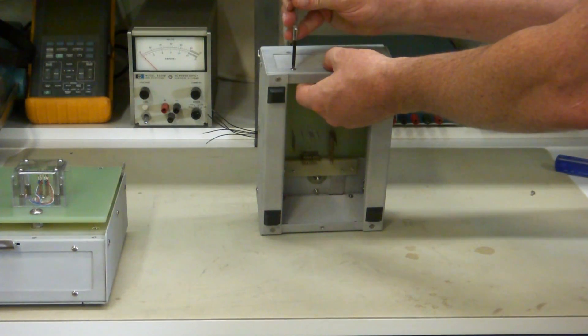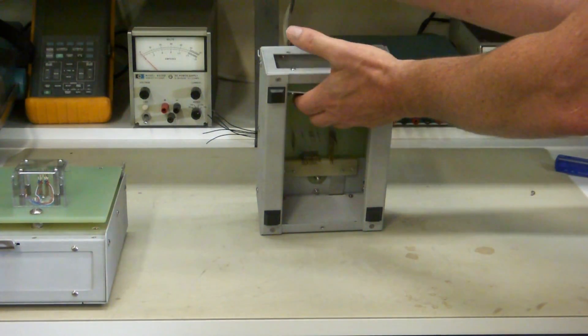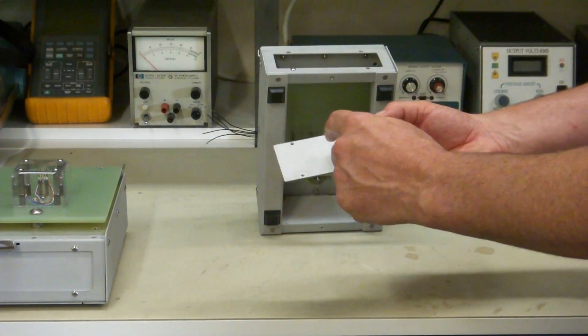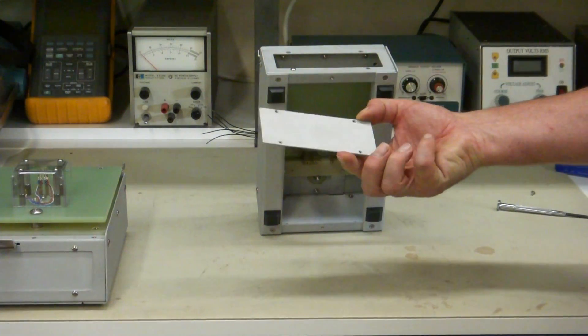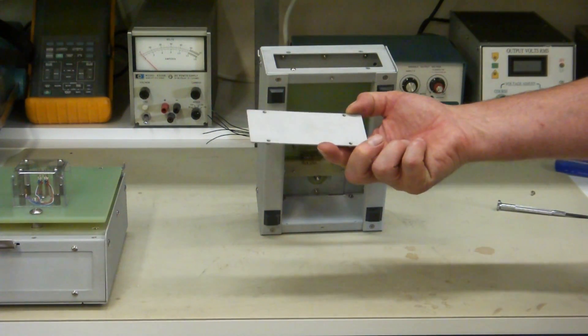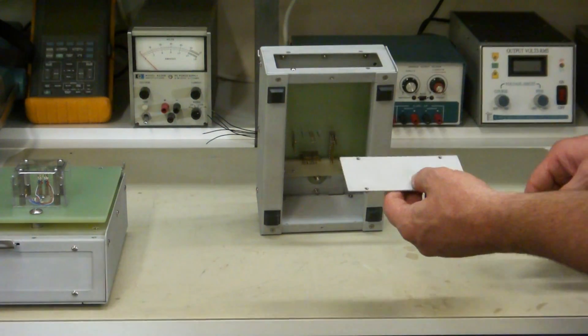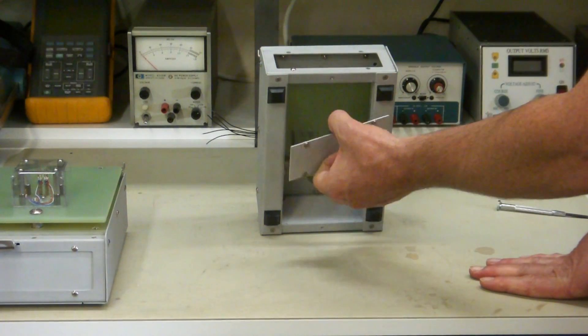Now you just take these two screws out. The plate drops right out the bottom and you can take it out. Now here you can mount connectors, drill holes for banana jacks or BNCs or punch-out D connectors. Whatever you want to mount in this, you can. And the front plate is exactly the same as this back plate.